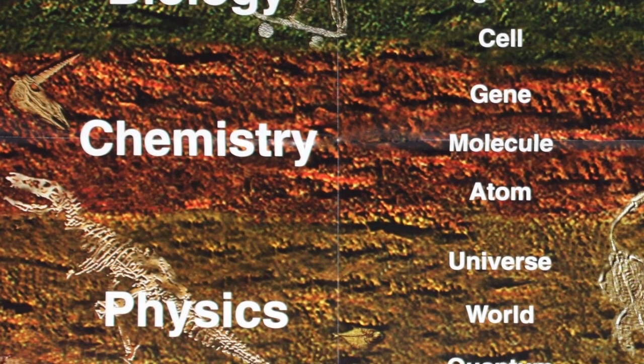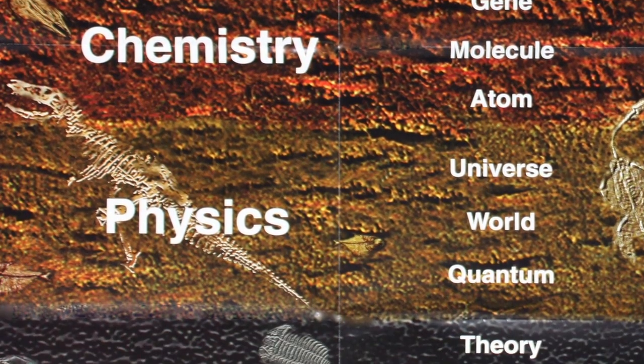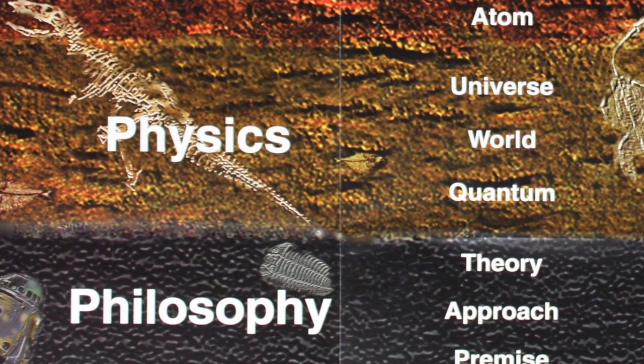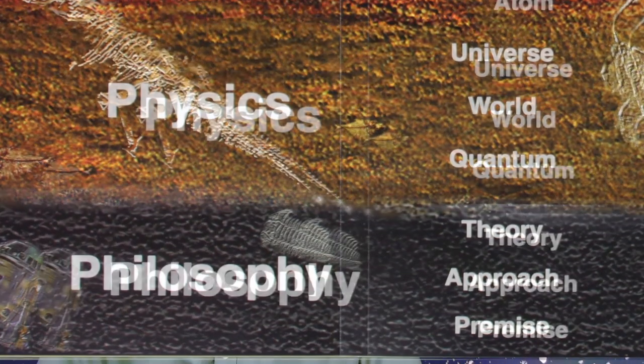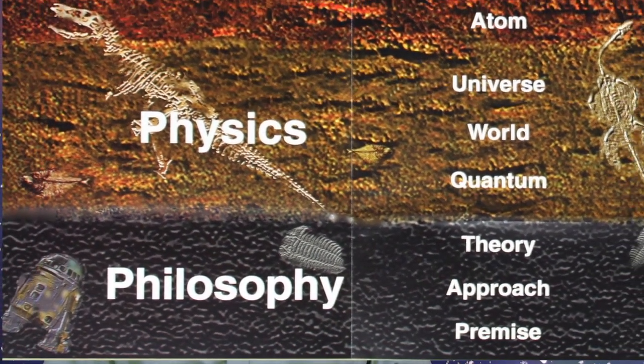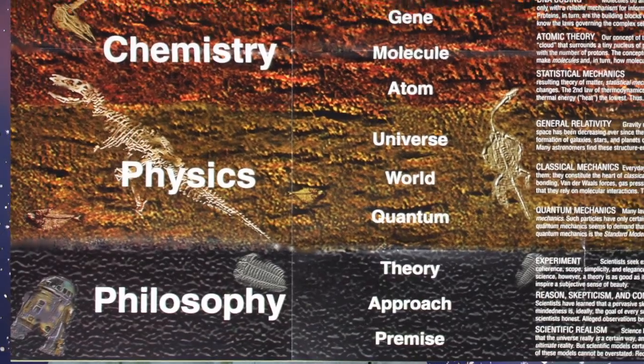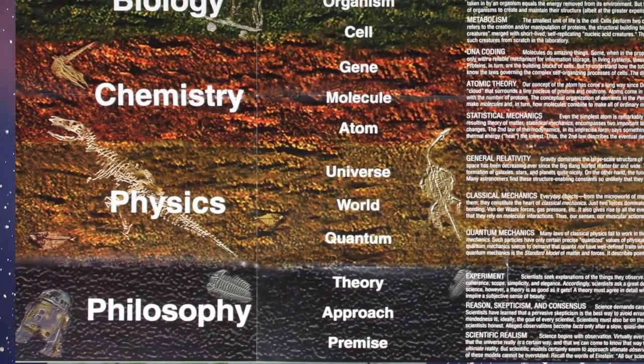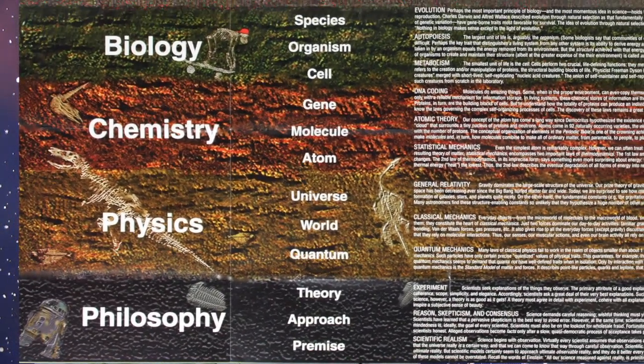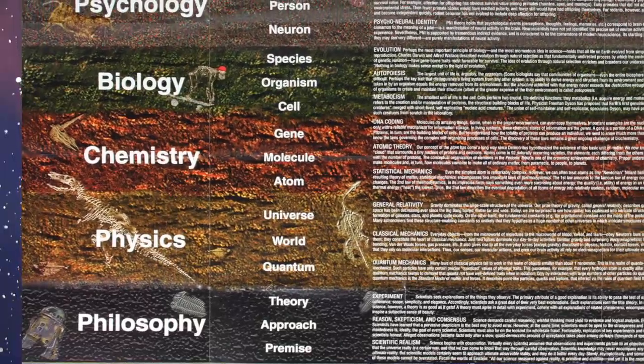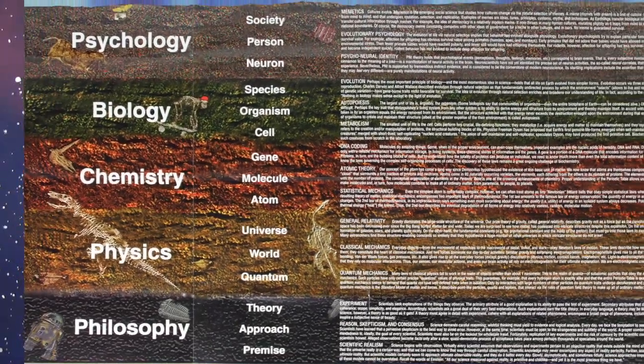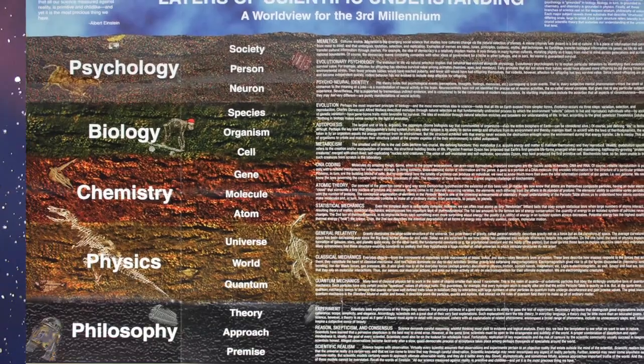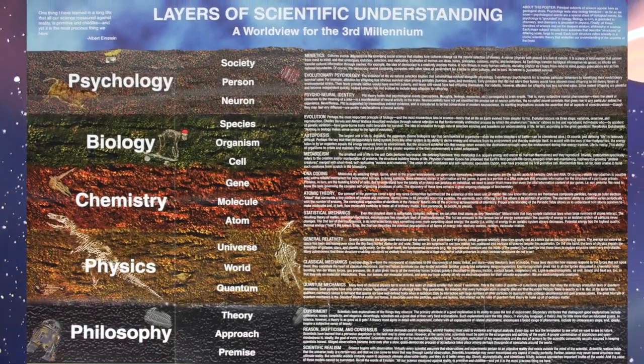Finally, all these branches of science rest on the deepest stratum, philosophy, the philosophy of science. Each major subject reveals three substrata that describe structures of differing scale, from large to small. Each such structure refers laterally to a crucial scientific theory that underlies our understanding of the universe at that level.